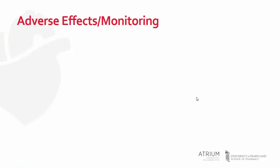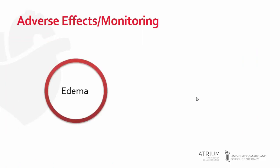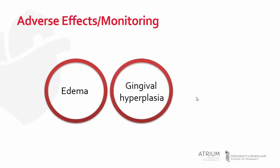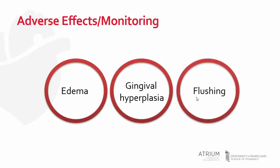Adverse effects of dihydropyridine calcium channel blockers are somewhat different than those of the non-dihydropyridines. Edema tends to be more common with dihydropyridine calcium channel blockers owing to the peripheral dilation that occurs. Gingival hyperplasia might be slightly more common in the dihydropyridine group as well. In addition, we can see flushing and a heat sensation in anywhere from 10% to 25% of patients, and acid reflux or heartburn occurs in up to 10% of patients due to relaxation of the pyloric sphincter.